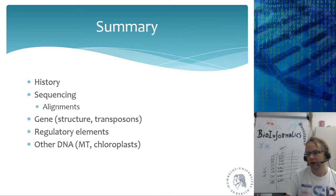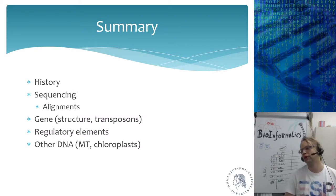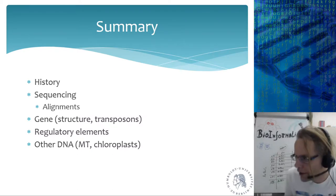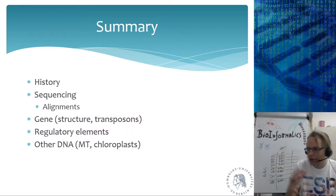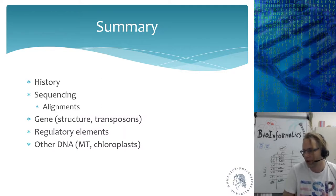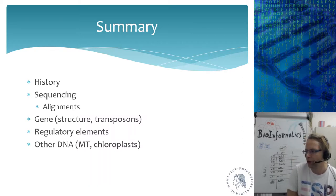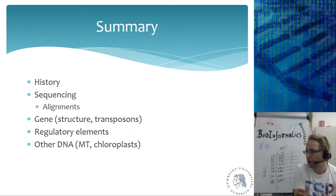That's it for today. I talked about DNA for almost three hours — DNA sequencing, sequence alignment, reference genomes, gene structure and the difference between eukaryotes and prokaryotes, transposable elements, regulatory elements (the key one being the TATA box), and two other DNA types of bacterial origin found in eukaryotic cells: mitochondrial DNA and chloroplast DNA.